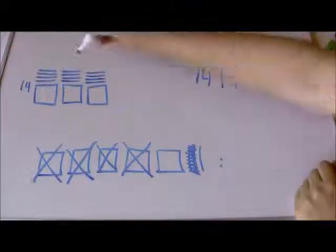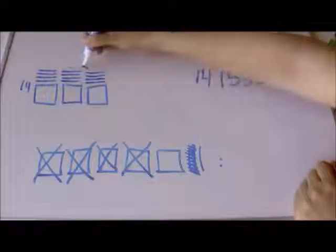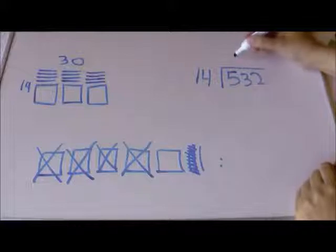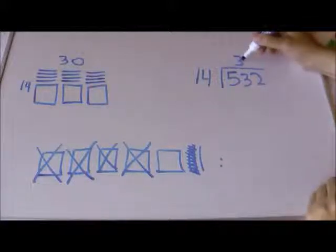So, I have 14 on that side, and I have gone across 10, 20, 30, or three tens. So, I've gone across three tens, I'm going to write that there.